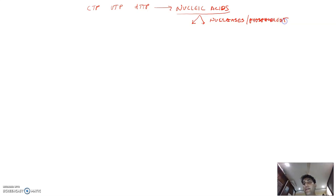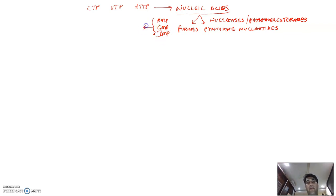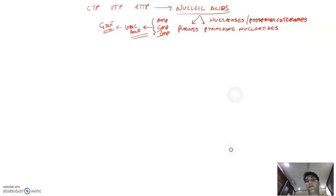By nucleases and phosphodiesterases, they are broken down into purine and pyrimidine nucleotides. Purine nucleotides were AMP, GMP, IMP and so on — these were converted into uric acid, as we have seen. Increase of uric acid leads to gout, which is a disorder we have seen in purine catabolism. Now in pyrimidine nucleotides, we have three: CMP, UMP, and TMP or dTMP.